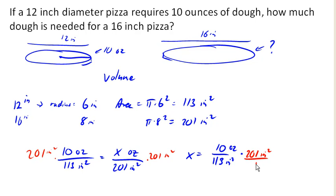If I multiply 10 times 201, and divide by 113, I end up with about 17.8 ounces of dough needed for that 16-inch pizza.